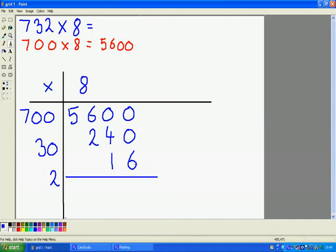0 add 0 add 6 is 6. 0 tens add 4 tens add 1 ten. 5 tens.